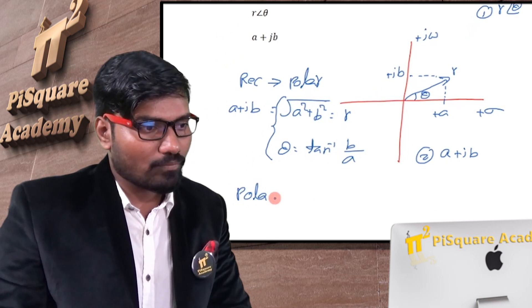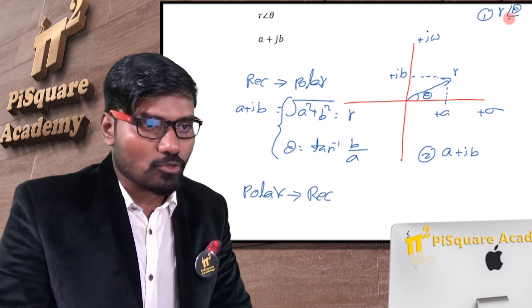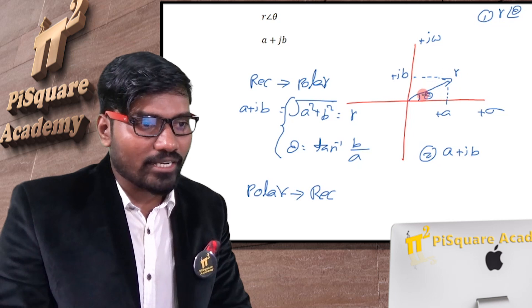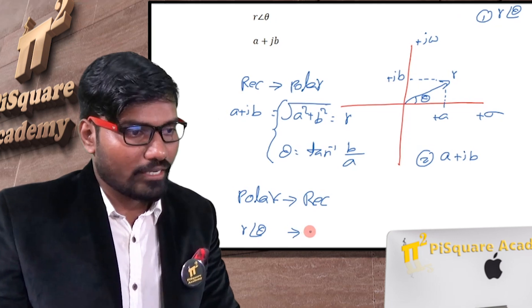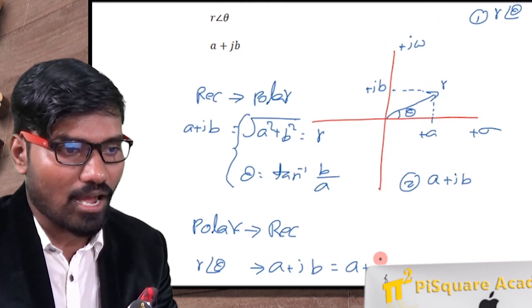Now let's convert polar form to rectangular form. Polar to rectangular. Means now I know these two values, I want to find a and b values. So if I know r value and theta value, how to get this a value? Simply, r theta is known, I want to find a plus jb, or sometimes people call it as a plus ib.